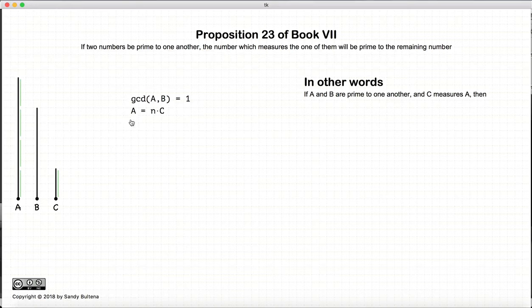This proposition states that if we start with these two conditions, then b and c will also be relatively prime, or in other words their greatest common divisor will be equal to 1.